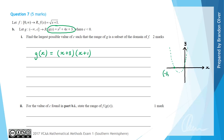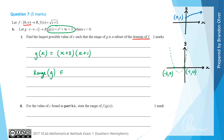So on the sketch, negative 3 comma 0 and negative 1 comma 0 are the x-intercepts. We need to find the largest possible value of c such that the range of g is a subset of the domain of f, which was 0 to infinity. Because g has a domain from negative infinity to c, we need the y values to remain within 0 to infinity. This means c equals negative 3 is the largest possible value, which gives the range of g as a subset of the domain of f.